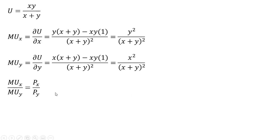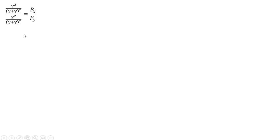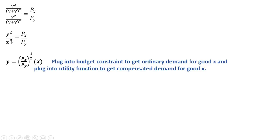Forming the utility maximizing condition, where the marginal rate of substitution equals the ratio of the prices, we make our substitutions. Rewriting, you'll notice the (X plus Y) squared terms cancel, leaving Y squared divided by X squared on the left-hand side. Solving for Y by taking the square root of both sides and multiplying through by X: plugging this into the budget constraint gives the ordinary Marshallian demand for good X, and plugging it into the utility function gives the compensated or Hicksian demand for good X.